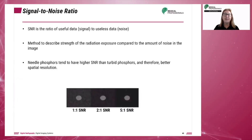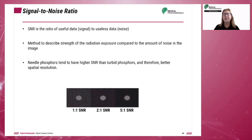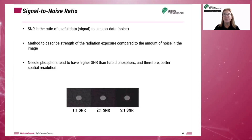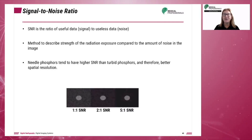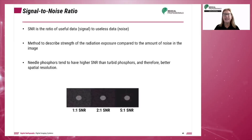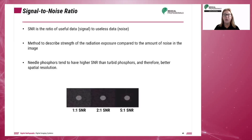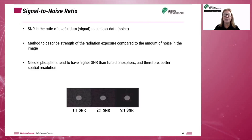Noise, especially quantum noise, limits our ability to see an object's edge and then limits the spatial resolution. A high signal-to-noise ratio indicates a highly efficient system that displays little noise and has higher spatial resolution.